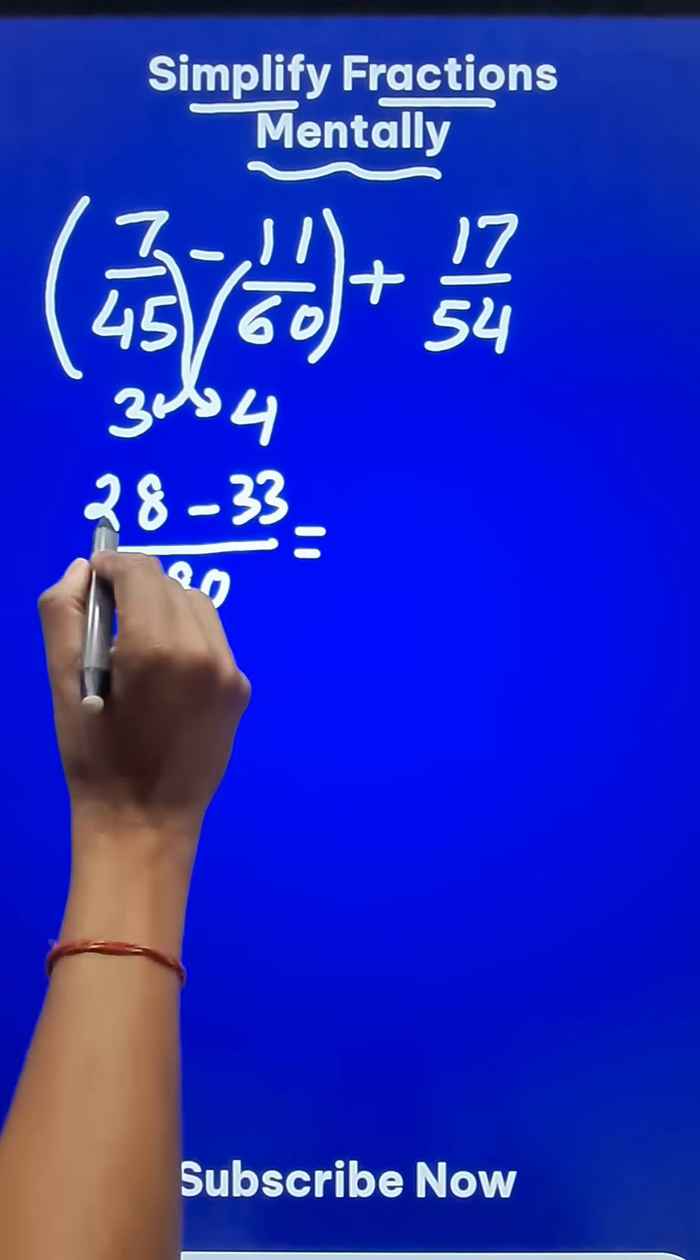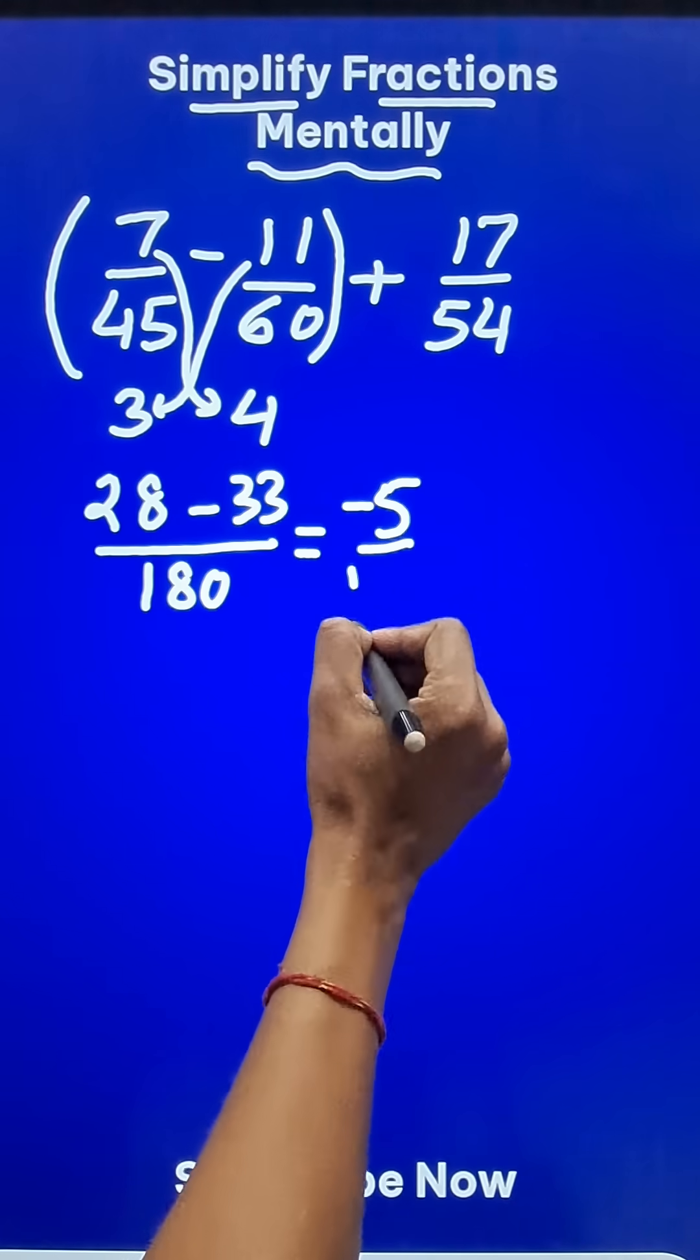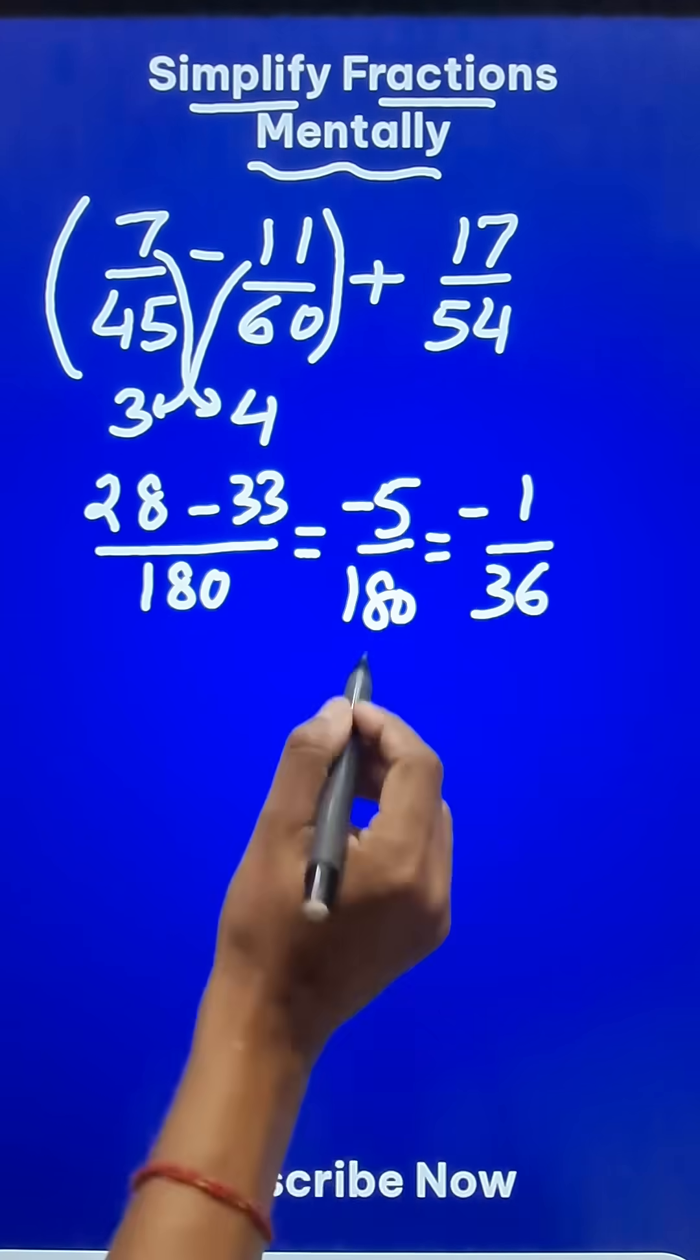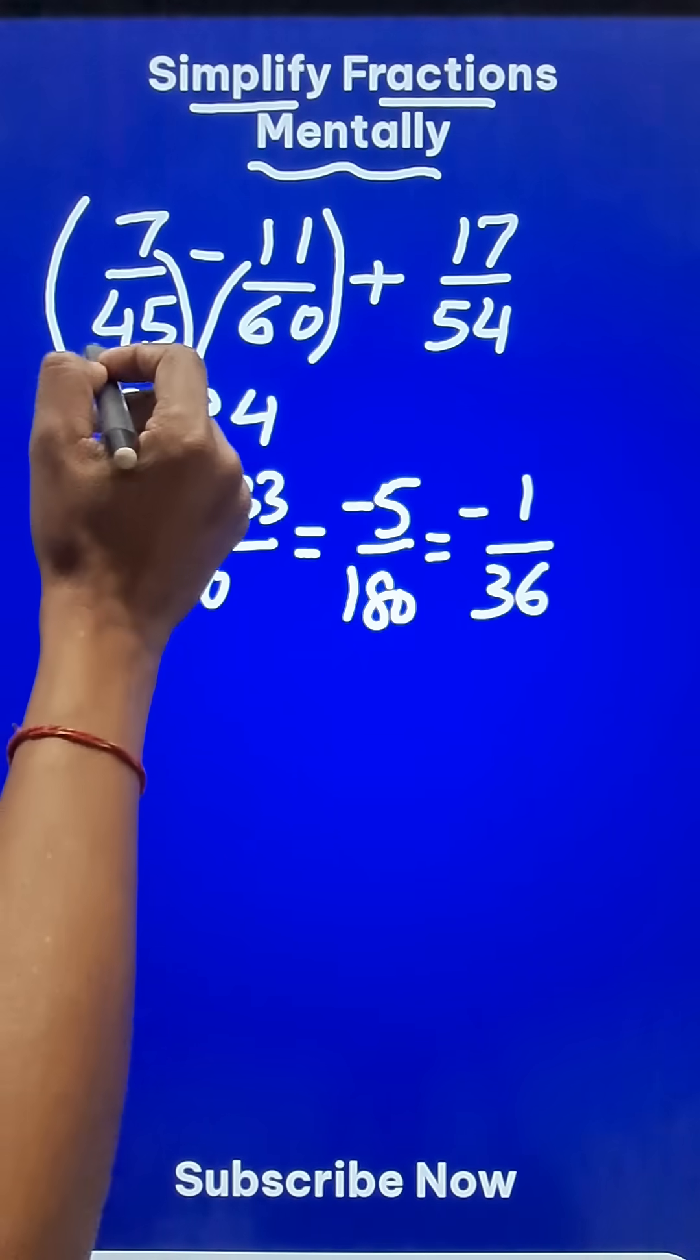Now what does this become? This becomes negative 5 over 180 which in turn reduces to negative 1 upon 36. So we have the simplification of the first bracket.